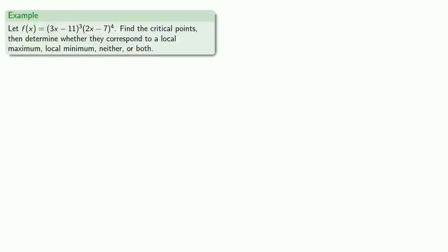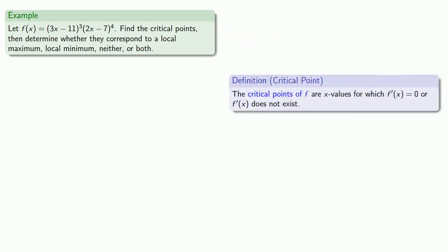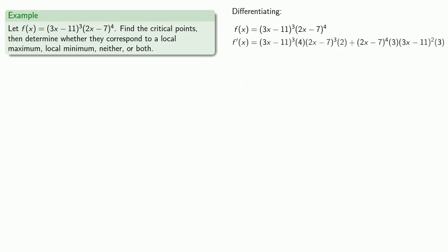For example, suppose I have this function, and I want to find the critical points and determine whether they correspond to a local maximum, local minimum, neither, or both. Since the critical points correspond to where the derivative is zero or fails to exist, my first task is to find the derivative. If we were just finding the derivative, this would be a sufficient answer. However, because we want to solve some equations with this, it'll probably be easiest to factor this, at least partially, and in particular factor out any common factors.